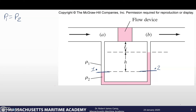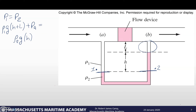The pressure at point one is this hydrostatic column pushing down on point one: density one times gravity for specific weight, times the height of that column, which is H plus L. Then we add whatever's pushing down on top — in this case, the pressure at A. That all equals the pressure at point two. For point two: first we have this small pink column — density two times gravity times height H. Then we add this column above it pushing down: density one times gravity times L. Then we add the pressure at B, since that's pushing down on everything.